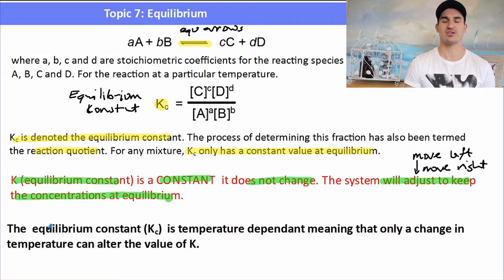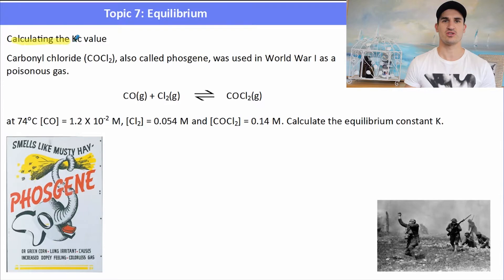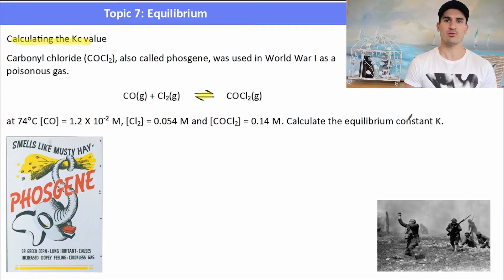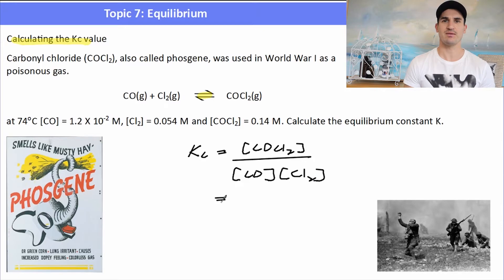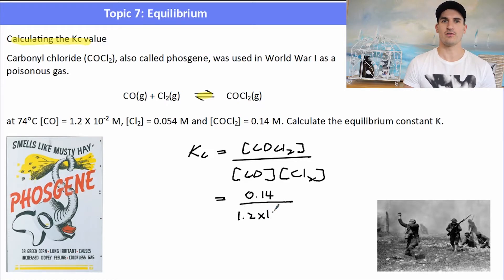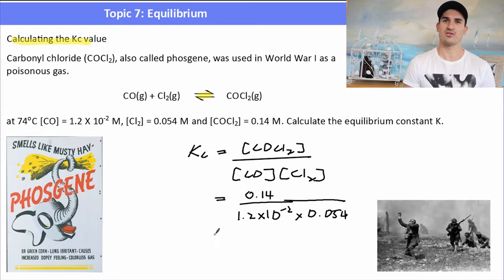The equilibrium constant is temperature dependent, meaning the only thing that can alter the value is a change in temperature. Here's an example — we have carbonyl chloride, also called phosgene, which was used in World War I as a chemical agent. We've been given some concentrations and the reaction with an equilibrium arrow. To write the equilibrium constant Kc, we take the concentration of the products to the power of their coefficients divided by the concentration of the reactants to the power of their coefficients. Here the coefficients are all 1, so we sub in the numbers: 0.14 over 1.2×10⁻² times 0.04554, which gives us an equilibrium constant of 216.